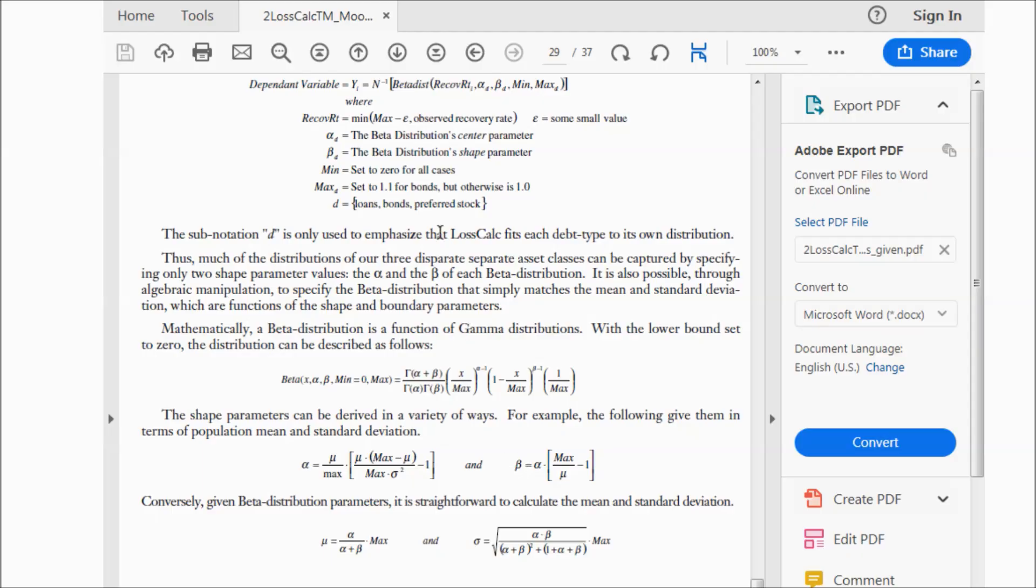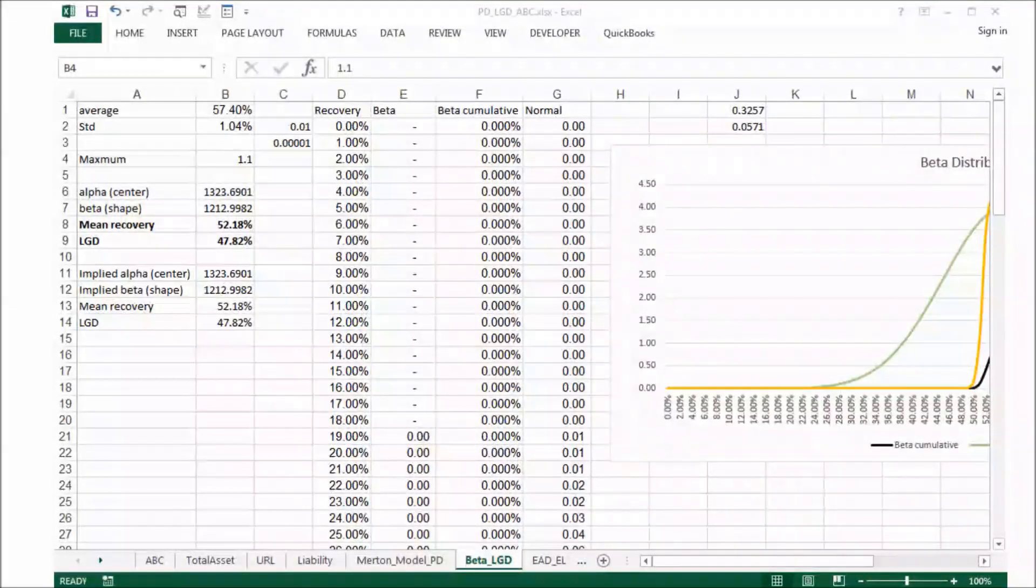Moody's has a system called loss calc for calculating loss given default. In this article, you can see if we know the mean and sigma and max and then we can calculate alpha and beta. And also it says if it's bound, we set max as 1.1. Otherwise, the max will be 1.